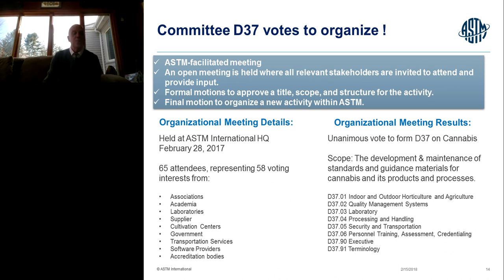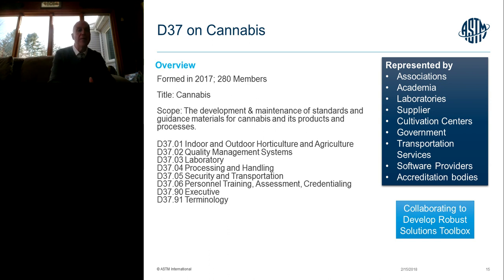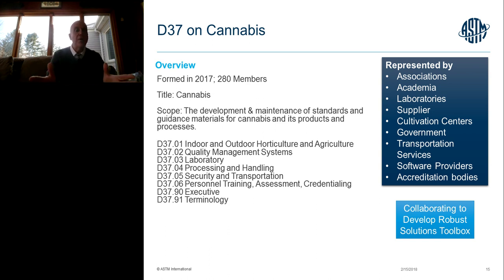As a result of this organizational meeting, they approved the scope — quite simple and broad: the development and maintenance of standards and guidance materials for cannabis and its products and services. They broke committee D37 on cannabis down into subcommittees, with representation by people that cultivate cannabis, people that supply cannabis, people from states involved in regulating cannabis, transportation and security professionals, software developers, accreditation bodies, laboratories, and researchers from academia. These are all the stakeholder entities represented in committee D37.